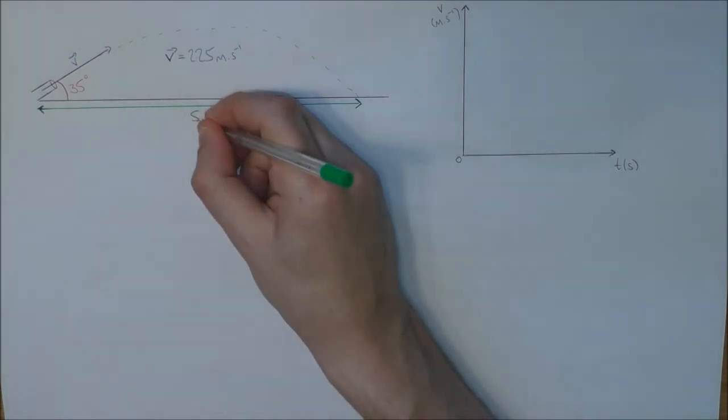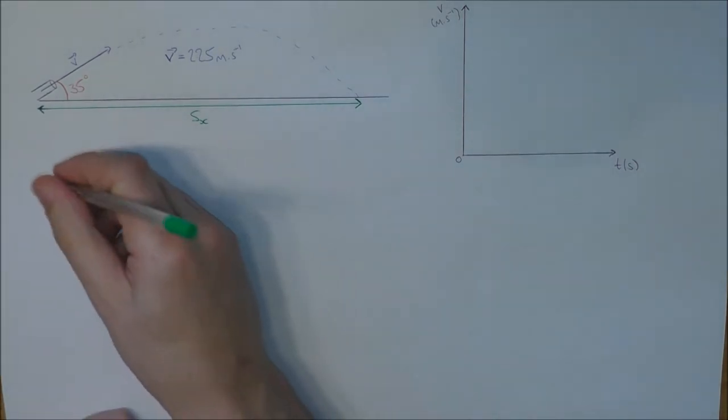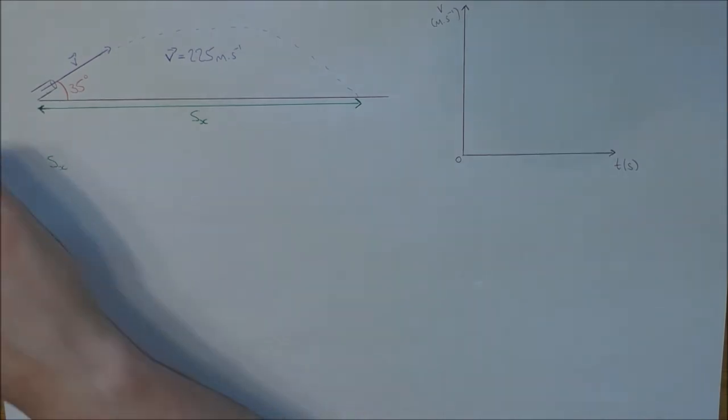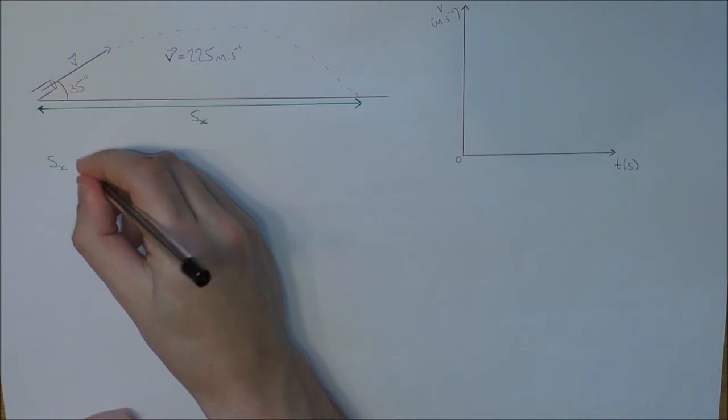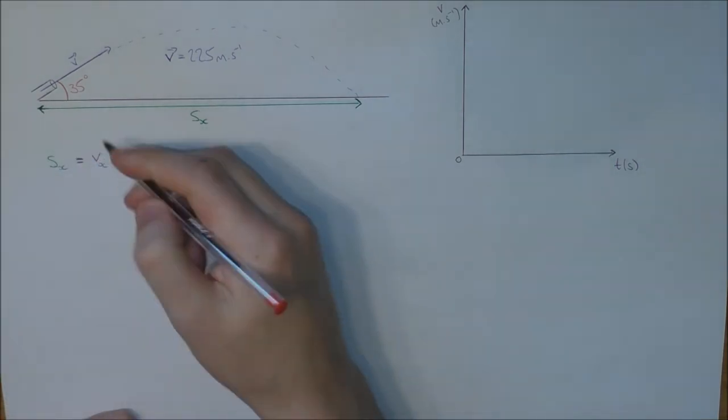I'm going to call that S_x. Now the overriding equation that we want for this is still S_x equals V_x times T_F.